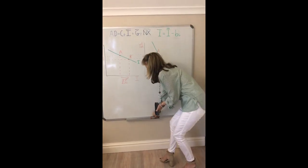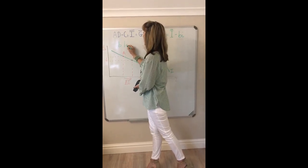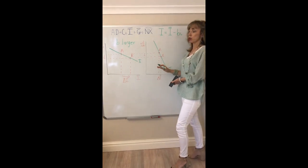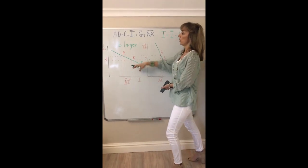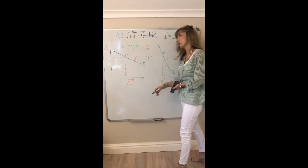So this would be a situation where your value of B is large, it's larger. We get a flatter investment demand schedule showing you that for a given change in the interest rate planned investment is much more responsive.